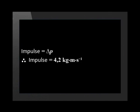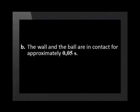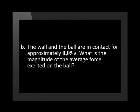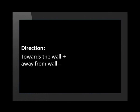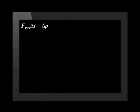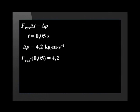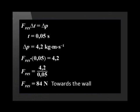Therefore, impulse equals 4.2 kilogram meters per second. The wall and the ball are in contact for approximately 0.05 seconds. What is the magnitude of the average force exerted on the ball? Remember, direction towards the wall is positive and away from the wall is negative. The formula states that resultant force times change in time equals the change in momentum. Time equals 0.05 seconds and change in momentum is 4.2 kilogram meters per second. So resultant force times 0.05 equals 4.2. Resultant force equals 4.2 divided by 0.05, which means resultant force equals 84 newtons towards the wall.